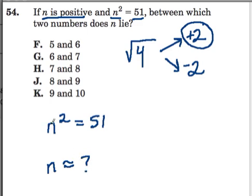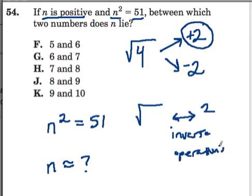If I know that n squared is 51 and I want to know what n is, I have to undo the square. Square roots and squares are called inverse operations.